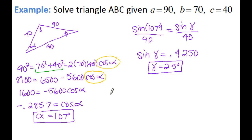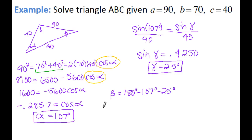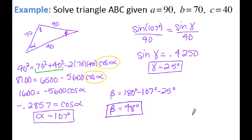Finally, for beta: 180 minus 107 minus 25 degrees gives me 48 degrees. So we now have all three angles — triangle is solved.